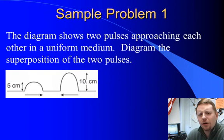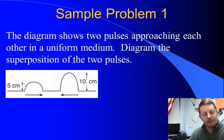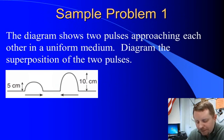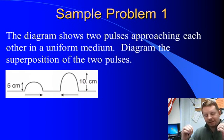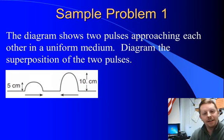Easier to show with a sample problem. The diagram shows two pulses approaching each other in a uniform medium. Diagram the superposition of the two pulses. Well, when they meet, as they cross over, their amplitudes are going to add. They're going to get bigger and then they're going to continue on their way.